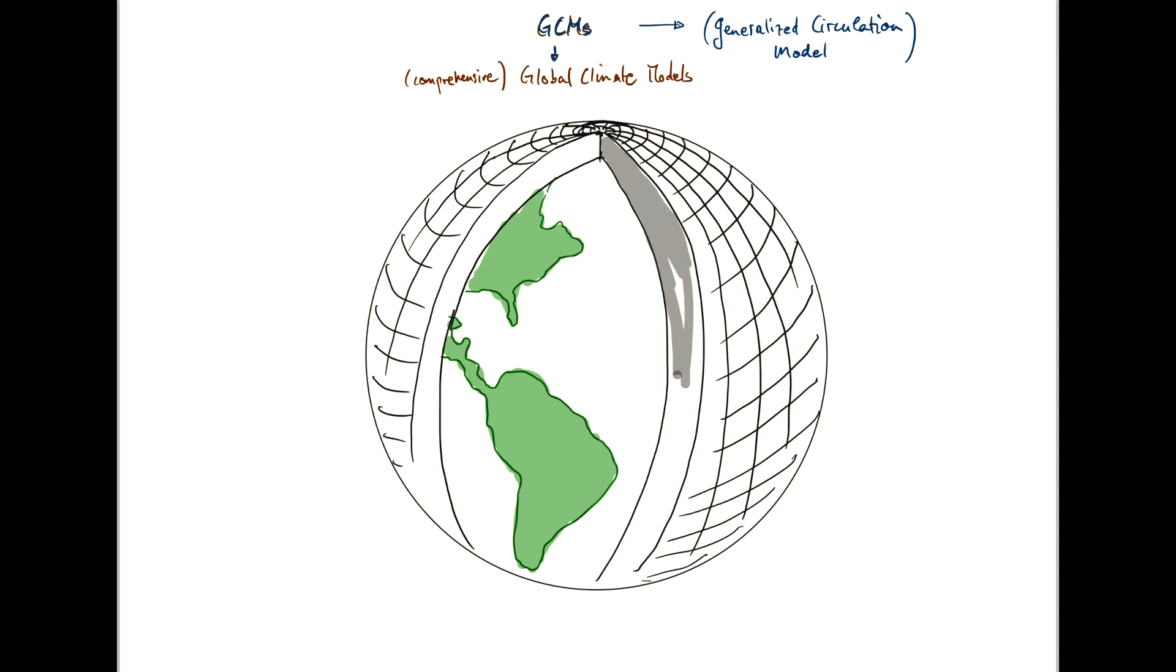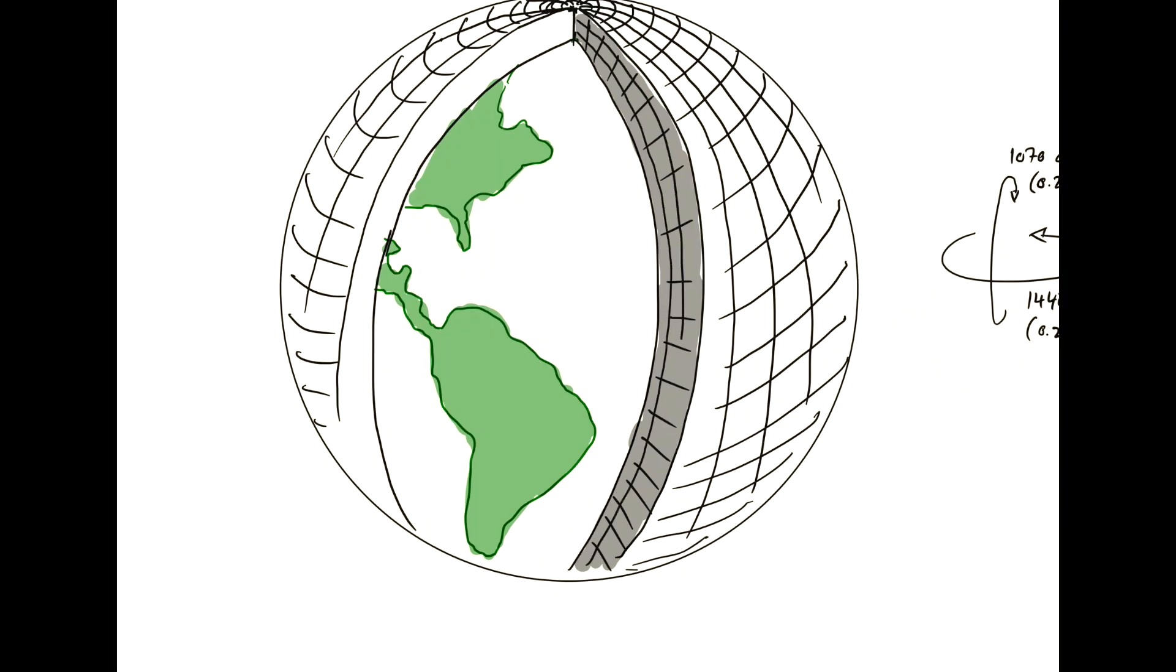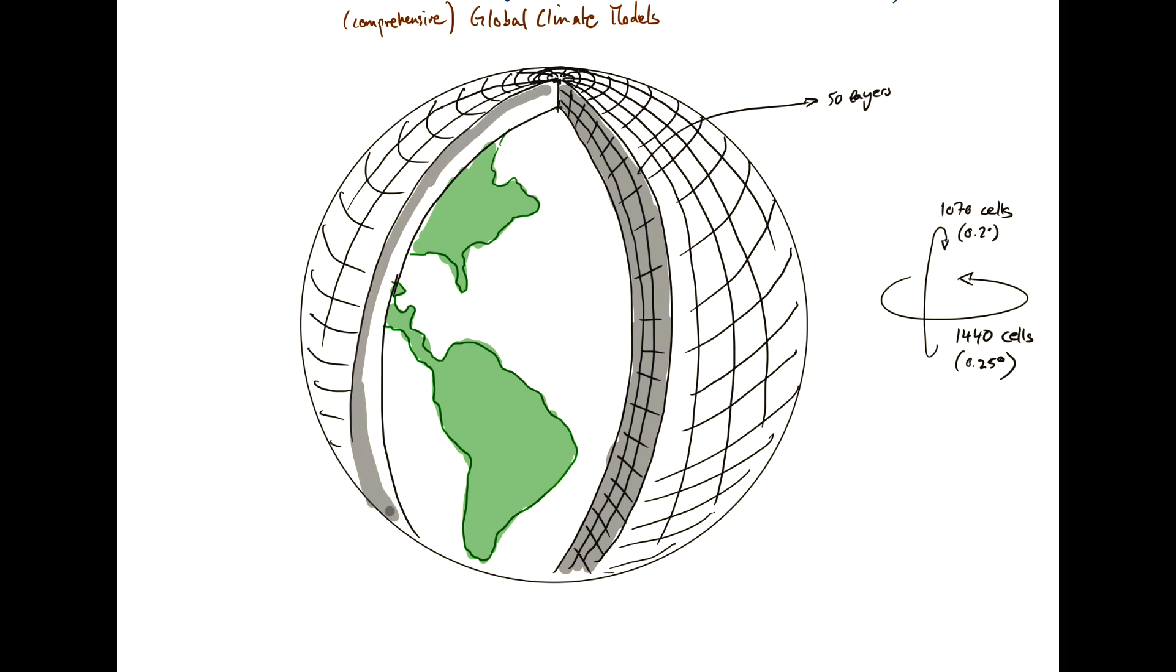And a modern GCM, sort of state-of-the-art, what we use currently in the most sophisticated research groups, has about 1,440 cells in the longitudinal direction, which corresponds to about a quarter degree horizontal resolution, and about 1,070 cells in the latitudinal direction, which on average corresponds also to around 0.2 degrees. And then you have vertical resolution. And so these vertical layers have around 50 layers in the atmosphere and in the ocean, approximately. So, this is the first component of what I've drawn here, our atmospheric model grid.